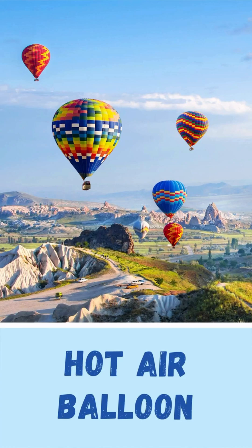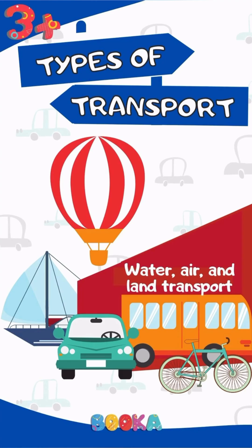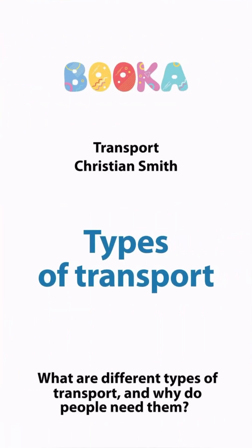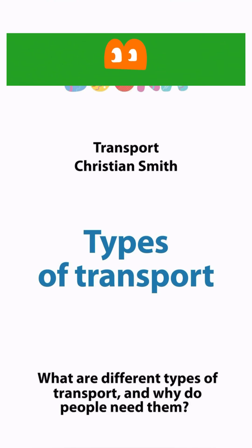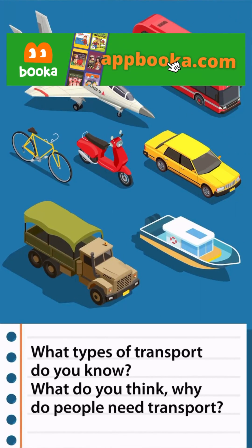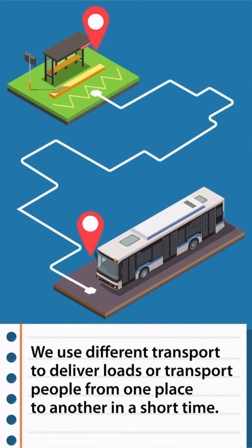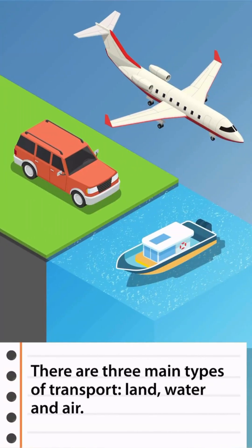Types of Transport: Water, Air, and Land Transport by Christian Smith. What are the different types of transport and why do people need them? We use different transport to deliver loads or transport people from one place to another in a short time. There are three main types of transport: land, water, and air.